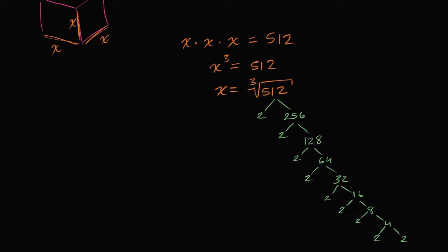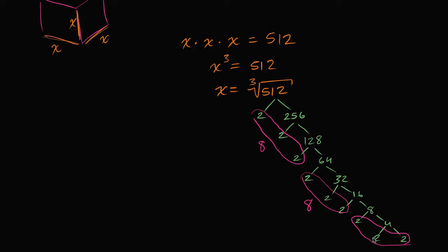And to think about that, we could say: I have nine twos here, so let me divide them into three groups. So if this is one group, and this is the next group, and this is the next group right over here, we could say that 512 is the same thing as 2 times 2 times 2 — which is 8 — times 2 times 2 times 2 — which is 8 — times 2 times 2 times 2. So 512 is the same thing as 8 to the third power.